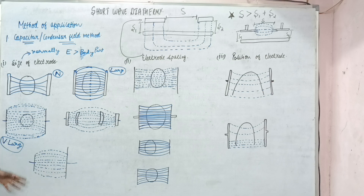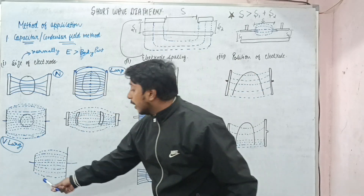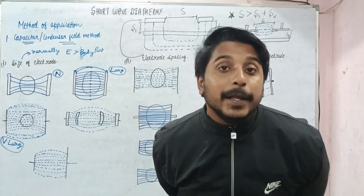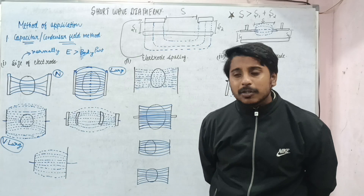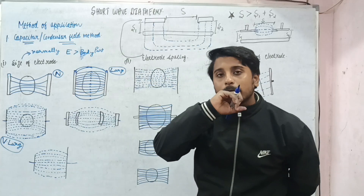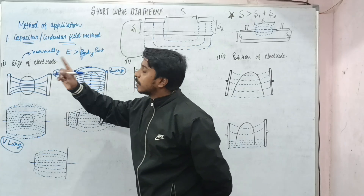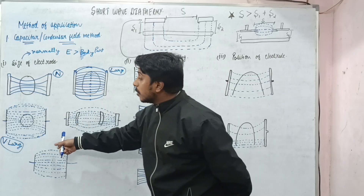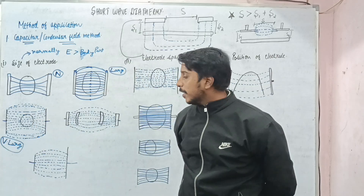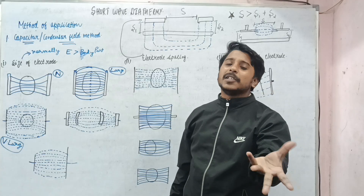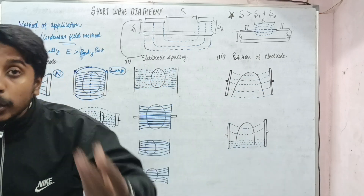If the electrodes are of uneven size — one small, one large — different amounts of charge are required to charge each electrode, which puts an uneven load on the SWD machine. So normally the size should be slightly 1 to 2 cm larger than the tissue, so that lines of force will bend toward it. If very large, most lines of force are wasted; if very small, lines of force spread and cause less heating; if uneven, it puts uneven load on the apparatus.